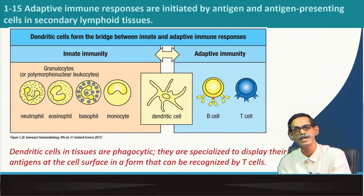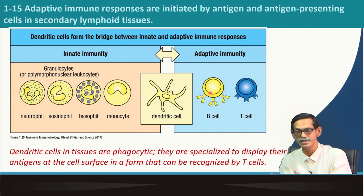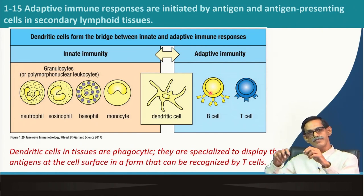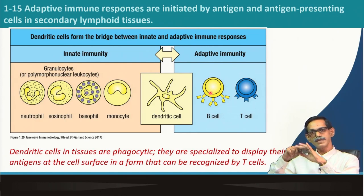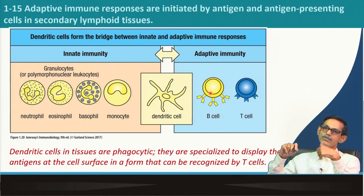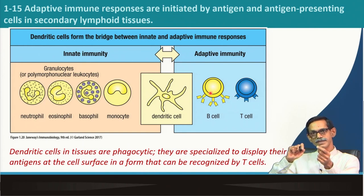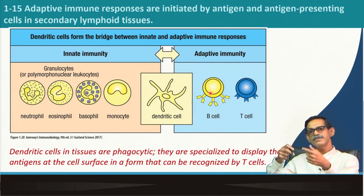B cells are activated and produce antibody to tackle the pathogen, and T cells help B cells in some cases. There are two types of T cells: helper T cells and cytotoxic T cells. In the case of B cell activation, helper T cells are involved. If a viral infection occurs, cytotoxic T cells are activated — because viruses grow inside our own cells, we have to kill the infected cell to stop their growth. Cytotoxic T cells recognize which cells are virus-infected, identify them, and kill those particular virus-infected cells so the virus cannot spread further. NK cells also help in this process.